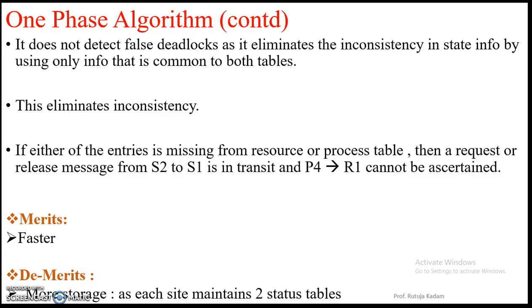This is how the Ho Ramamoorthy phase 1 algorithm works and eliminates the inconsistency, because we are taking only the information that is common to both the tables.